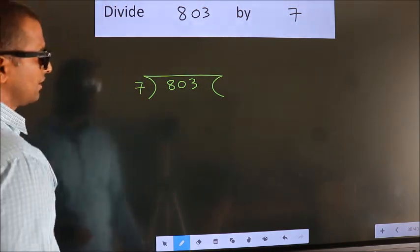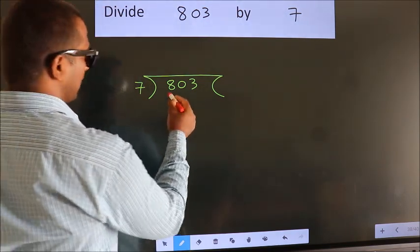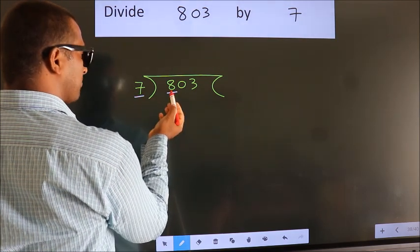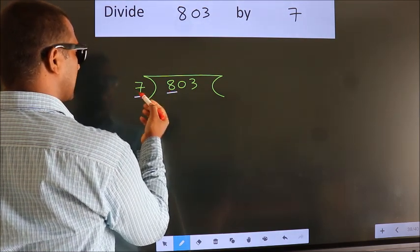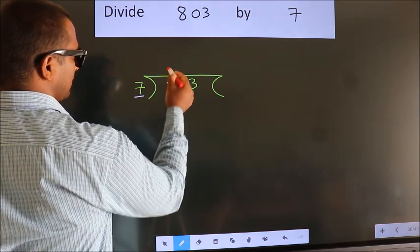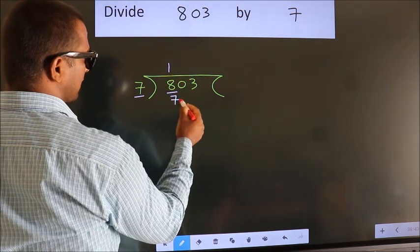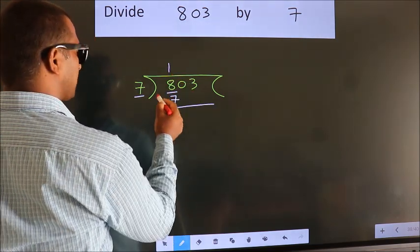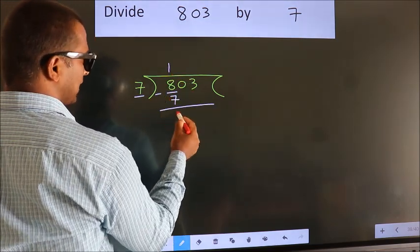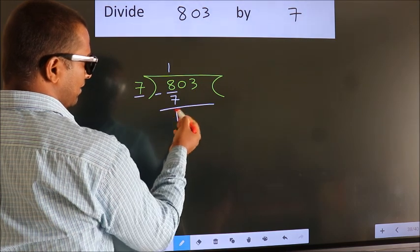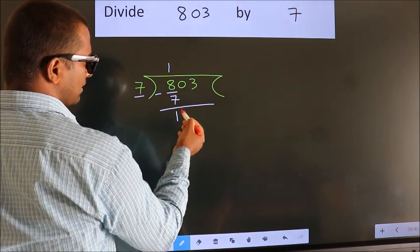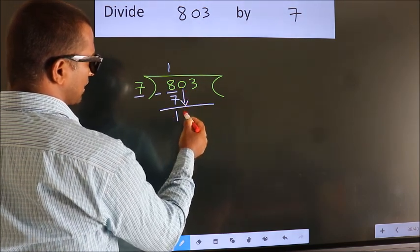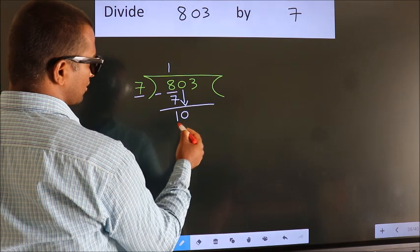Next, here we have 8, here 7. A number close to 8 in the 7 table is 7 once 7. Now we should subtract — we get 1. After this, bring down the beside number. So, 0 down. So, 10.